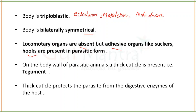Adhesive organs are those which help the parasite attach to or stick onto the body of the host. Examples of adhesive organs are suckers and hooks. If we talk about the body wall of parasitic animals and platyhelminthes, or endoparasites specifically,